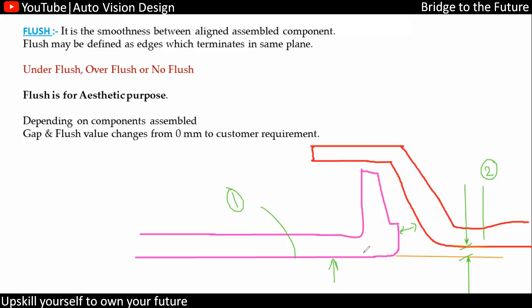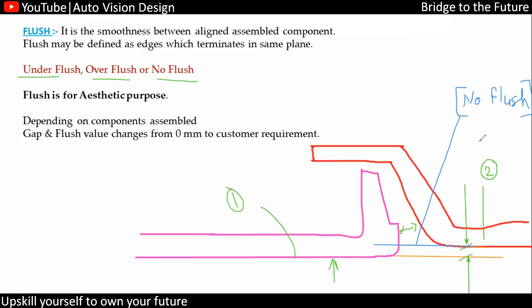The surface level difference between part one and part two in Class A is known as the flush. This is again classified as under flush, over flush, or no flush. No flush means we have a zero condition — a straight zero line — meaning both surfaces are at the same level, so we call that no flush or zero flush.